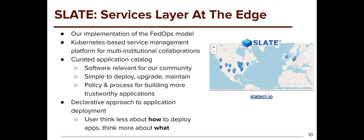We've built a policy process to establish what it means to be a trustworthy application. Overall, we've been taking a declarative approach to application deployment — we want users to not think in terms of Kubernetes objects, but rather in terms of: how much memory and CPU do I need? What ports need to be exposed to the network? What IPs am I going to allow to access it? That sort of thing.